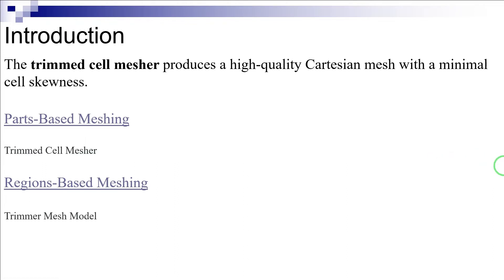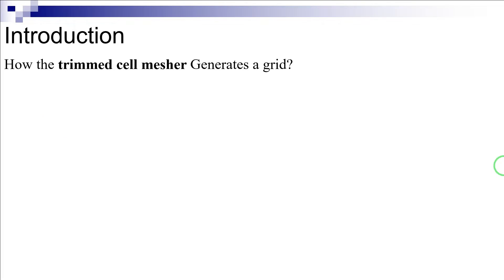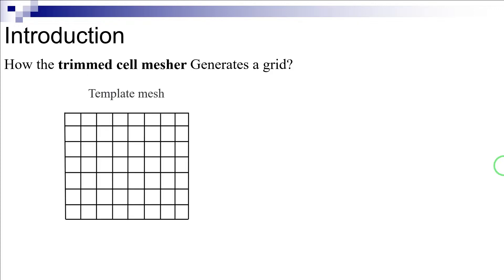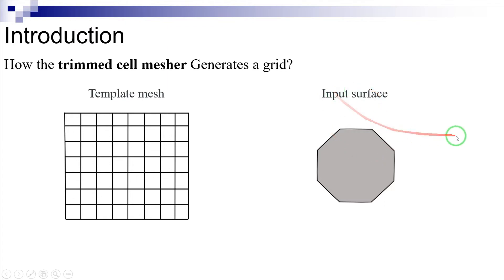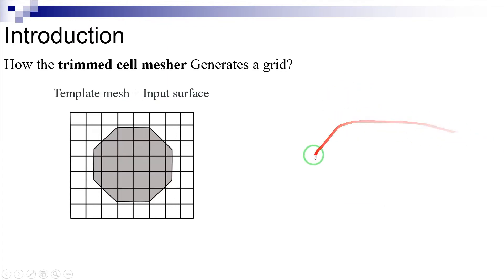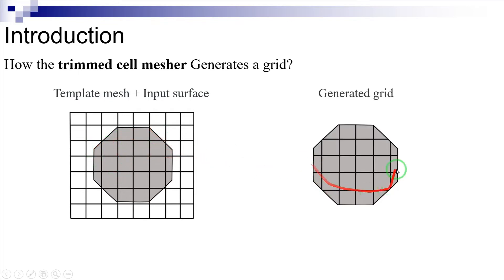Let's first see how the trim cell mesher generates a grid for an arbitrary input surface. At first, it generates an initial template mesh, which is constructed only from hexahedral cells, as shown here. This template mesh is generated based on the target size and local refinement controls that the user has specified. Then, using the input surface, the trim cell mesher cuts or trims the template mesh based on the input surface, leaving you with a mesh which is predominantly constituted of hexahedral cells with trim cells next to the boundaries.